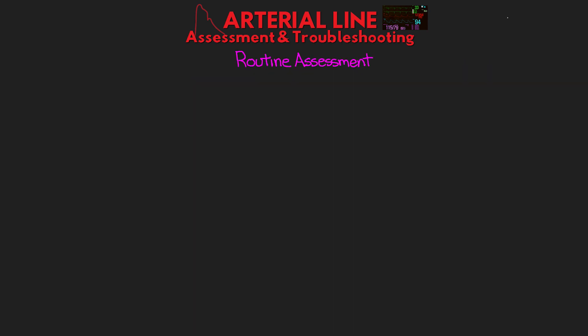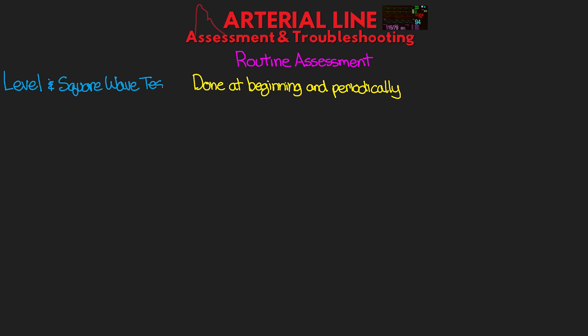Now let's talk about our routine assessment. Along with the beginning-of-shift assessment, there are periodic assessments that need to be done with the arterial line — their frequency depends on your facility's policy, such as hourly, every two hours, or at least every four hours. For this routine assessment, you want to do a level check and a square wave test. You don't need to zero at this point, but both of these take just a moment.